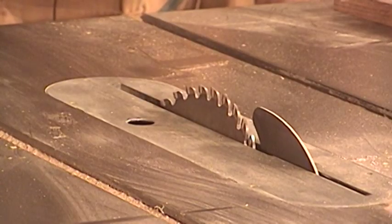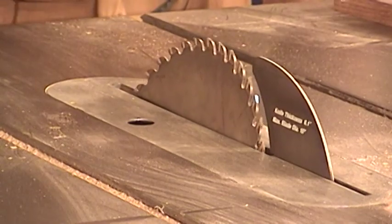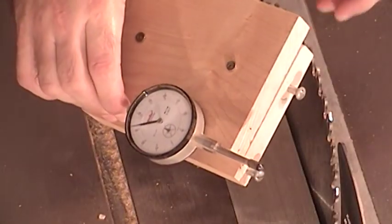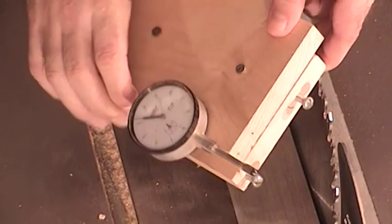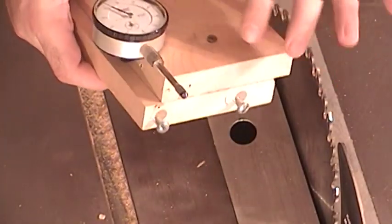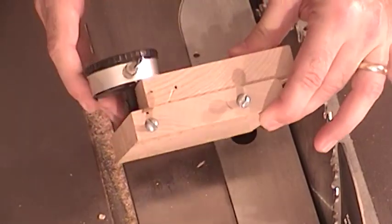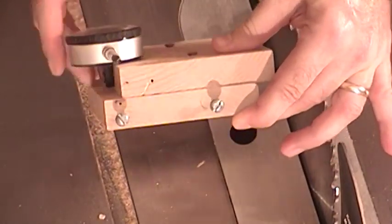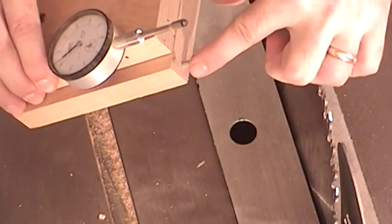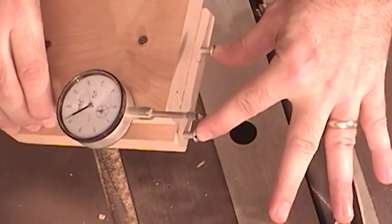Okay, so the first thing you're going to want to do is extend the table saw blade all the way up. Next, make a dial indicator jig like the one I'm showing here. It simply consists of two blocks of wood that are screwed together and offset, and it has a dial indicator attached to one side. It has two screws at the bottom of the jig that are used to reference the table saw blade.